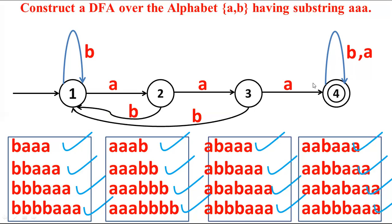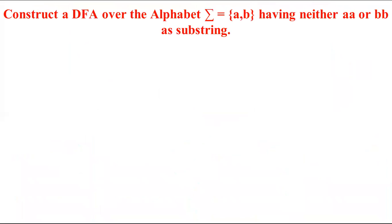Now let us construct a DFA which accepts the language where sigma equals {a, b}, that has neither 'aa' nor 'bb' as a substring. If you look at the question clearly, there is a twist — notice the word 'neither'.